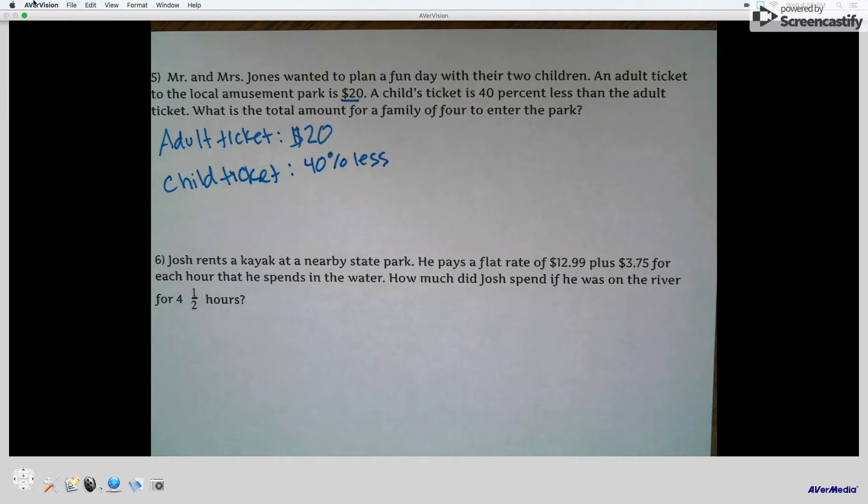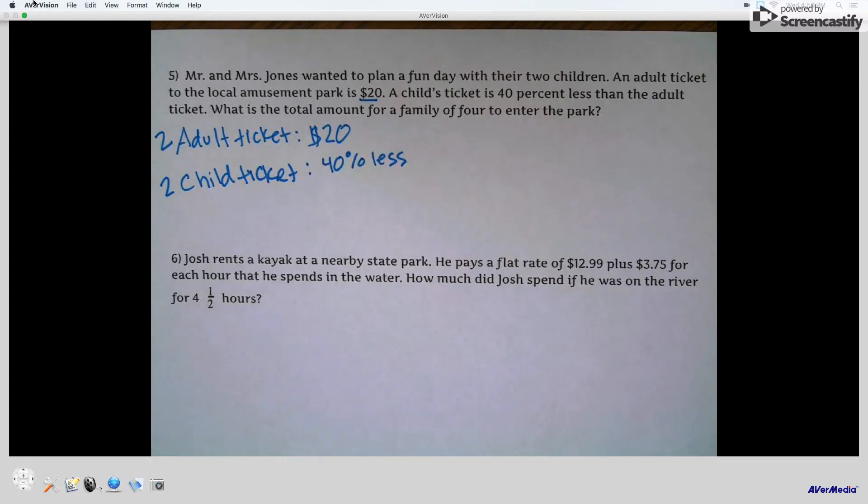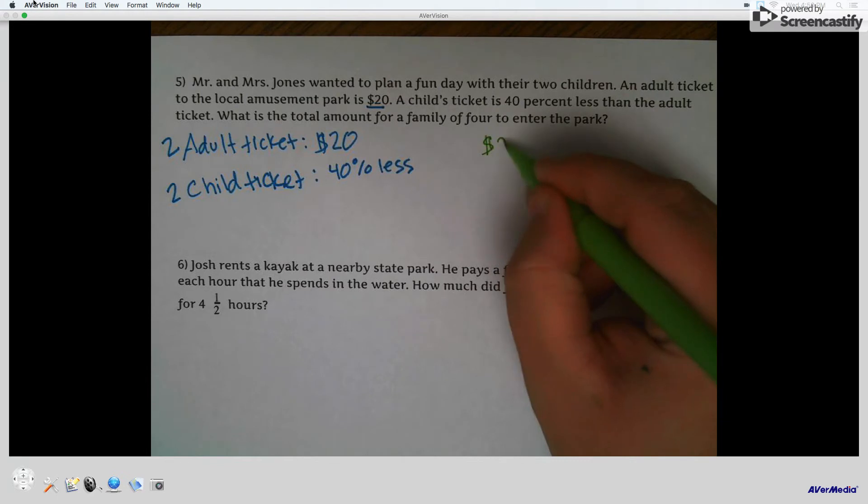Okay, what is the total amount for a family of four to enter? So they have two children, two adults. Okay, so to start, we know that the two adult tickets, 20 plus 20. Adult number one plus adult number two.